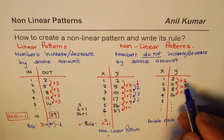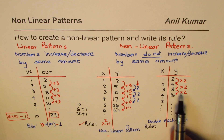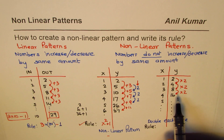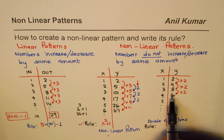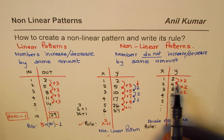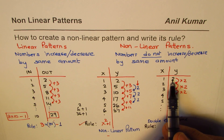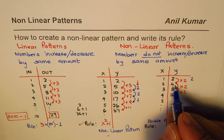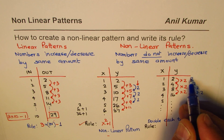Since we double each time, the rule involves multiplying by two repeatedly. Notice: two has one two, four is two twos multiplied, eight is two times two times two. The number of twos being multiplied matches the input value x.